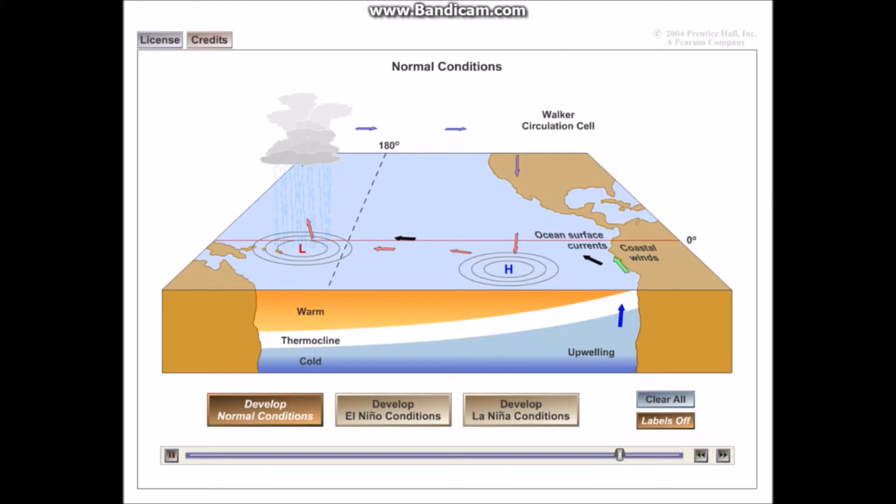So normal conditions imply that you have the Walker Cell, the trade winds are blowing from the coast of South America to the coast of Southeast Asia, the sea level is slightly higher in Southeast Asia than it is in South America, and you get this large body of warm pooling water in Southeast Asia and you get this cold body of water caused by upwelling and maybe the Peru current that is in South America, and these are the normal conditions that occur.